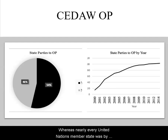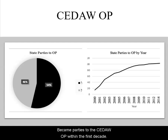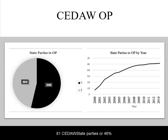Whereas nearly every United Nations member state was by then a state party to CEDAW, a little over half — or 104 nation states, 54 percent — became parties to the CEDAW OP within the first decade. 81 CEDAW state parties, or 46 percent, did not become parties to the CEDAW OP.